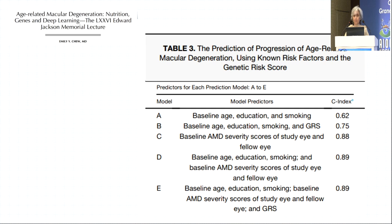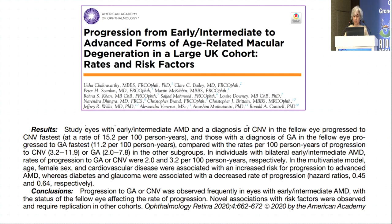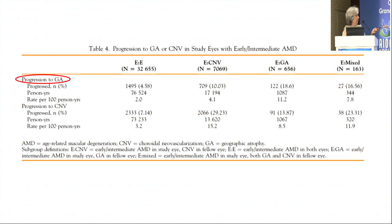The Edward Memorial Jackson lecture was given by Dr. Emily Chu. She has an interesting table showing that as the number of known risk factors increases — age, education, smoking, baseline AMD severity scores of the study eye and fellow eye, and genetic risk factors — the C-index goes fairly high, almost up to one, which is significant. The large UK cohort also showed the importance of the fellow eye: the increase in progression to geographic atrophy increases with worse fellow eye status.